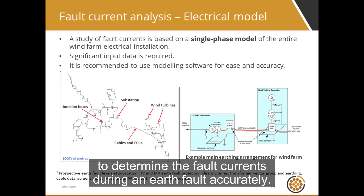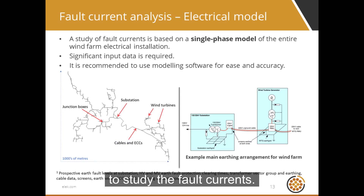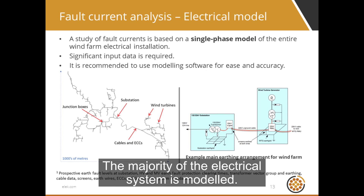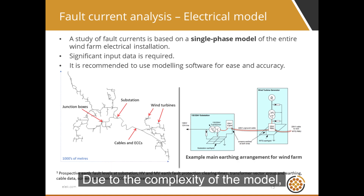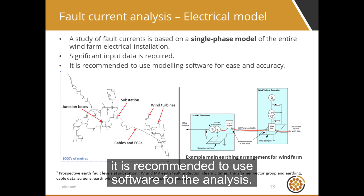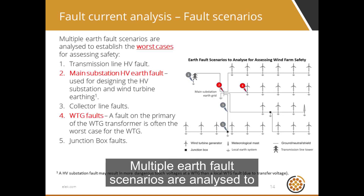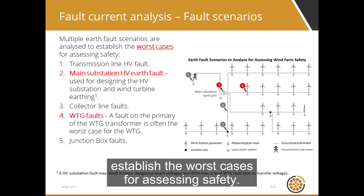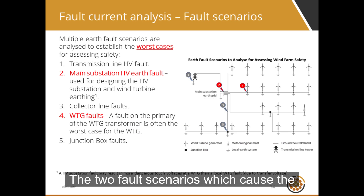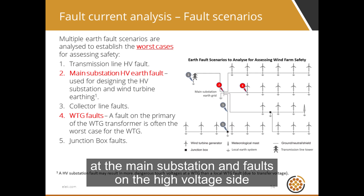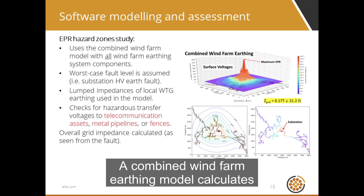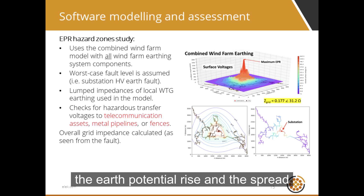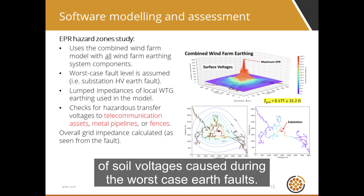To design the earthing, it is important to determine the fault currents during an earth fault accurately. A single-phase electrical model is used to study the fault currents, and the majority of the electrical system is modeled, requiring a significant amount of input data. Due to the complexity of the model, it is recommended to use software for the analysis. Multiple earth fault scenarios are analyzed to establish the worst cases for assessing safety. The two fault scenarios which cause the highest touch voltage hazards are generally high-voltage earth faults at the main substation, and faults on the high-voltage side of the wind turbine generator transformers. A combined wind farm earthing model calculates the earth potential rise and the spread of soil voltages caused during worst-case earth faults.